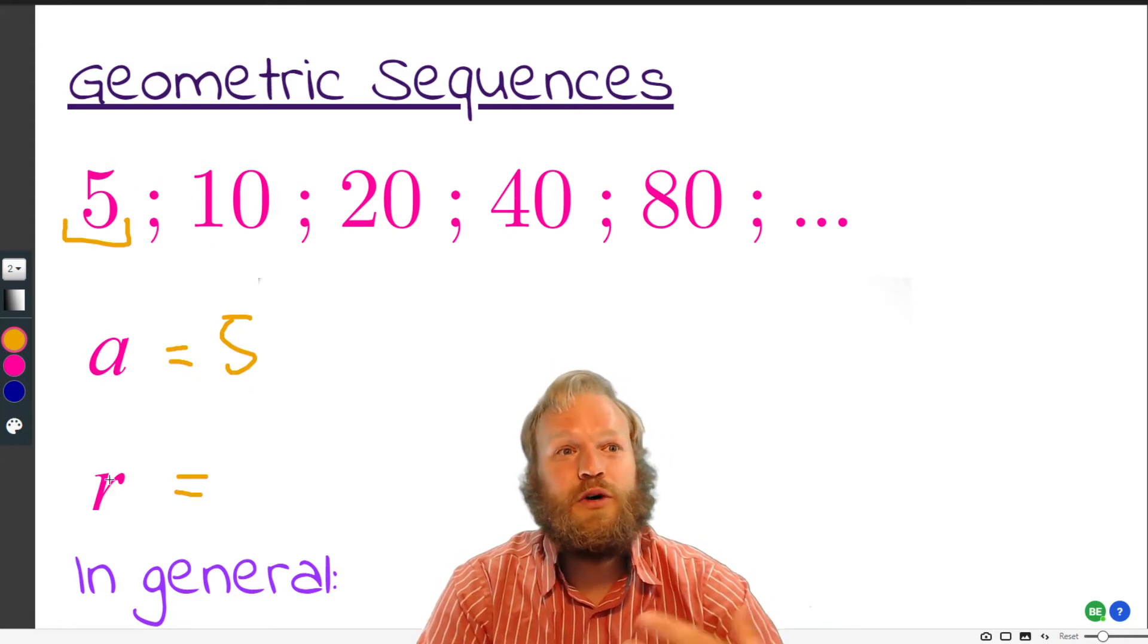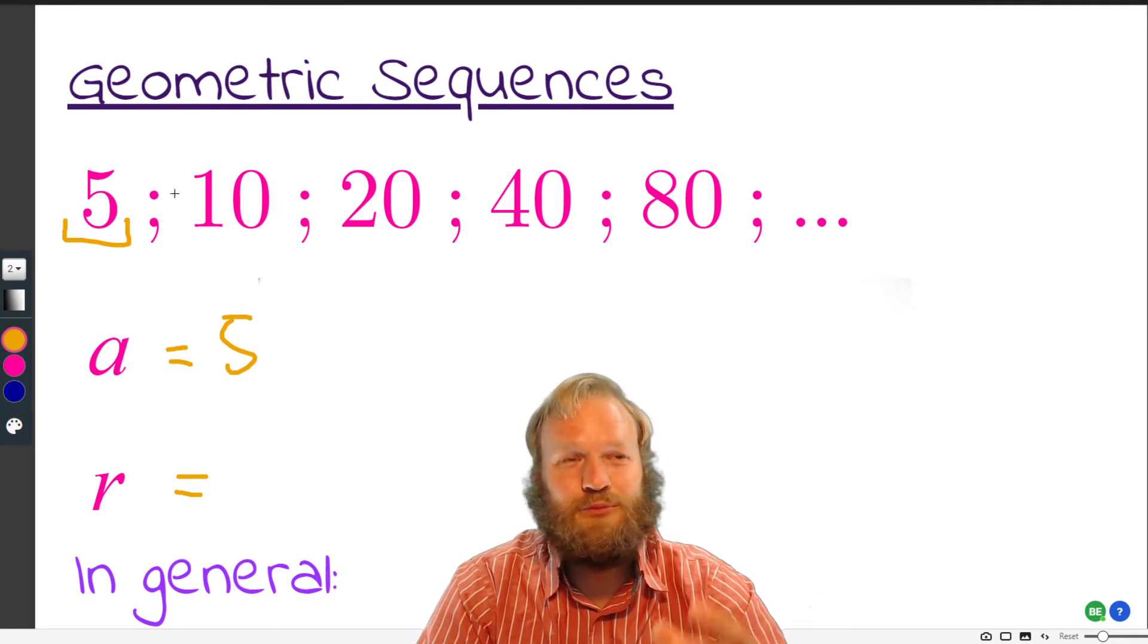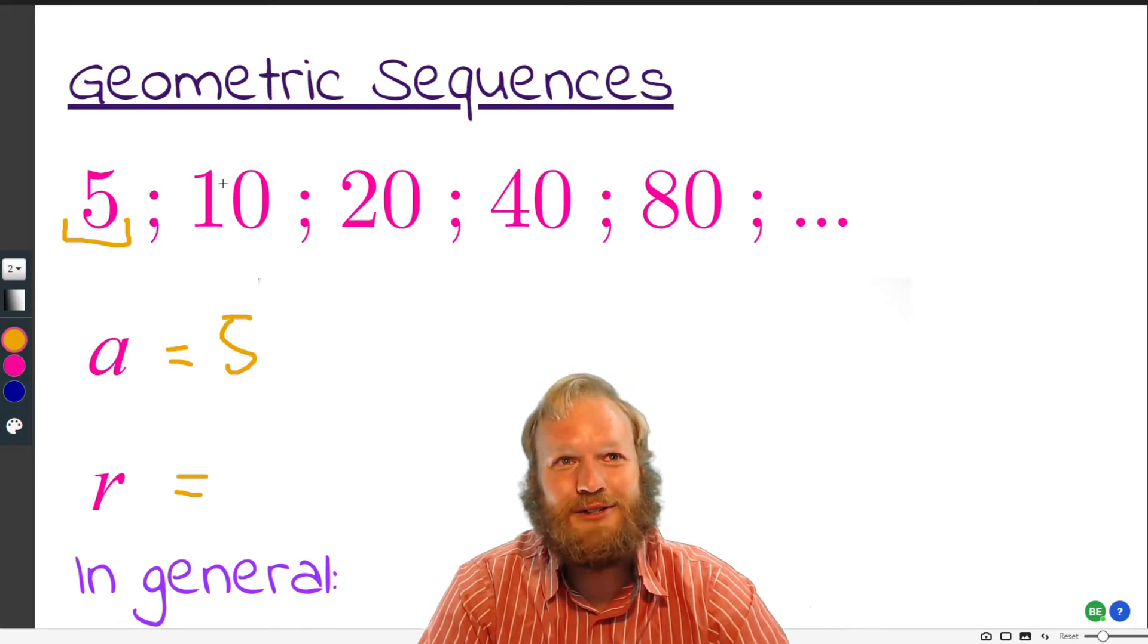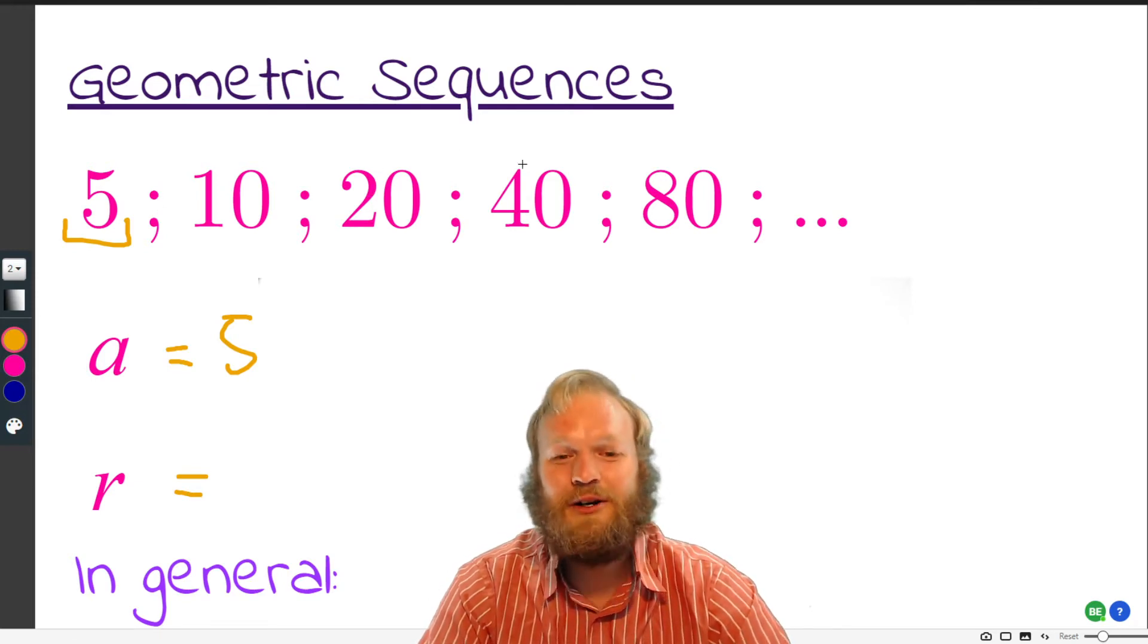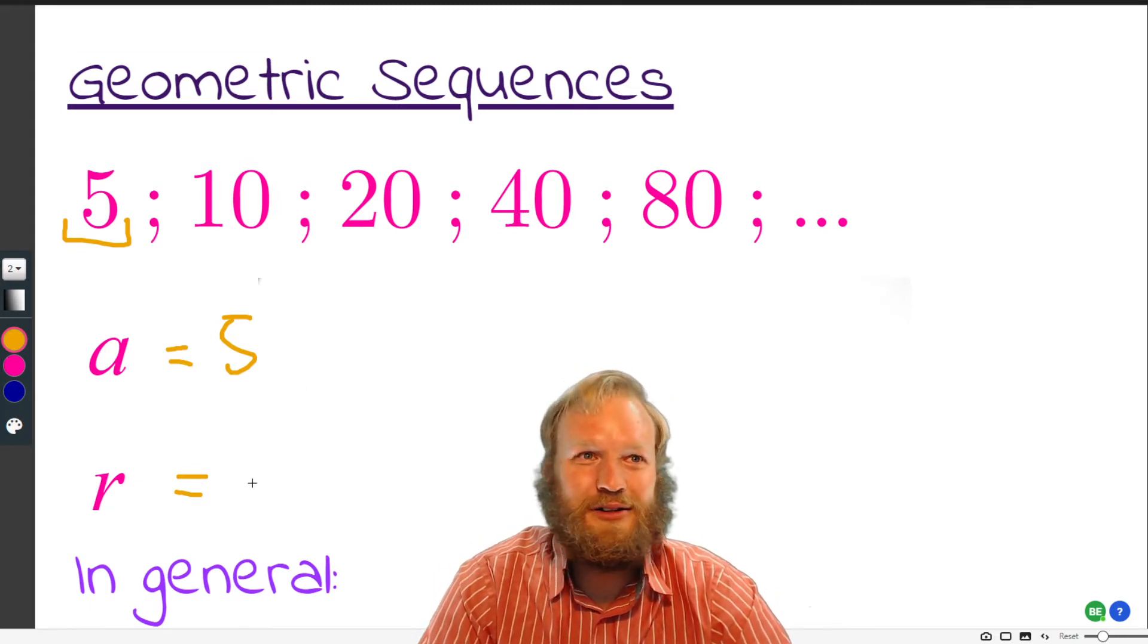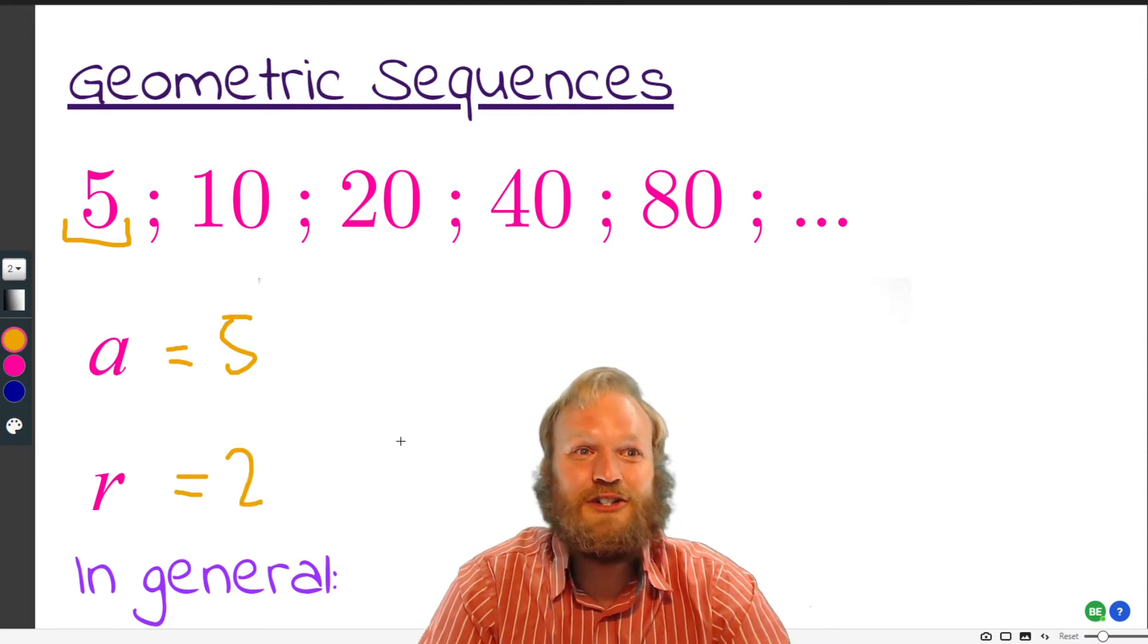And the ratio is what you're multiplying each term by to get to the next. So what is R? In other words, what is 5 multiplied by to get to 10? And what is 10 multiplied to get to 20? What is 20 multiplied by to get to 40? Well, hopefully you got the idea that R is 2.